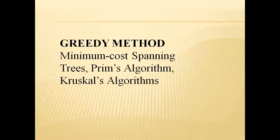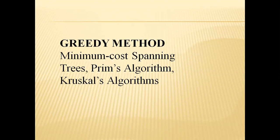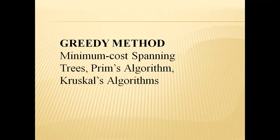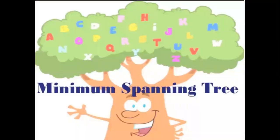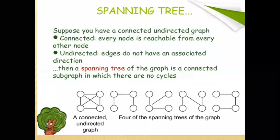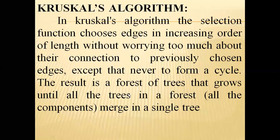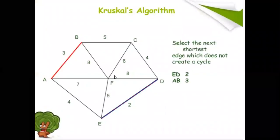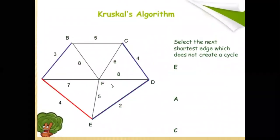By using the greedy method, you are finding the minimum cost spanning tree. In the greedy method, you are directly finding the optimal solution without calculating all feasible solutions. That is, without enumerating all feasible solutions, we directly calculate the optimal solution — the minimum cost spanning tree.